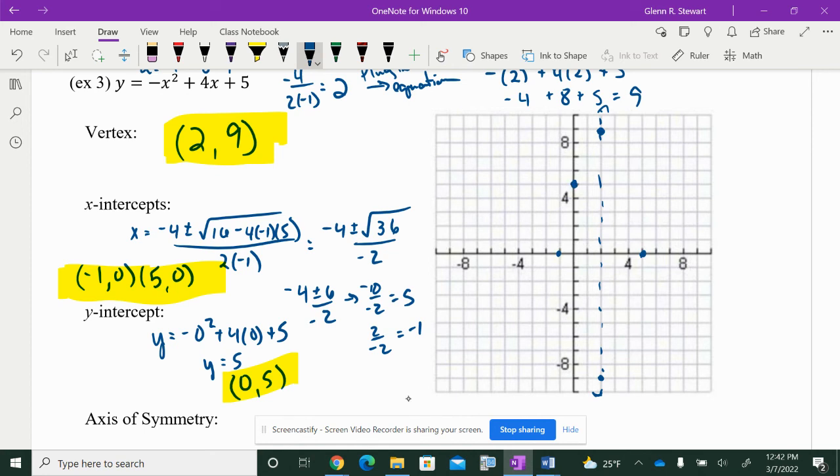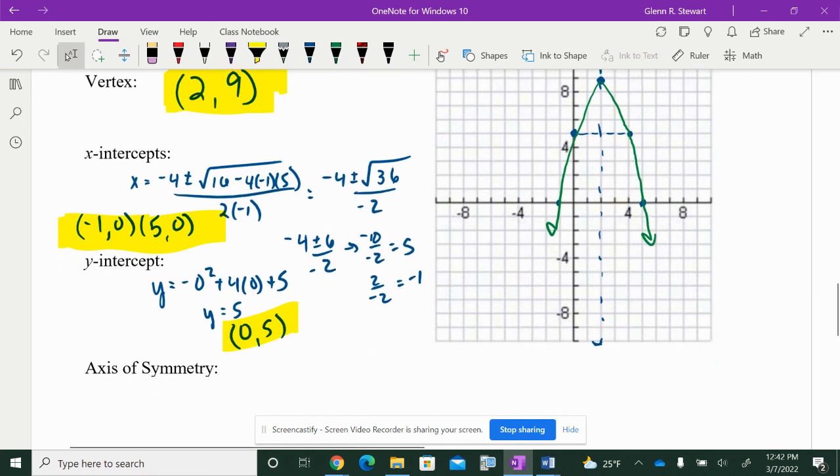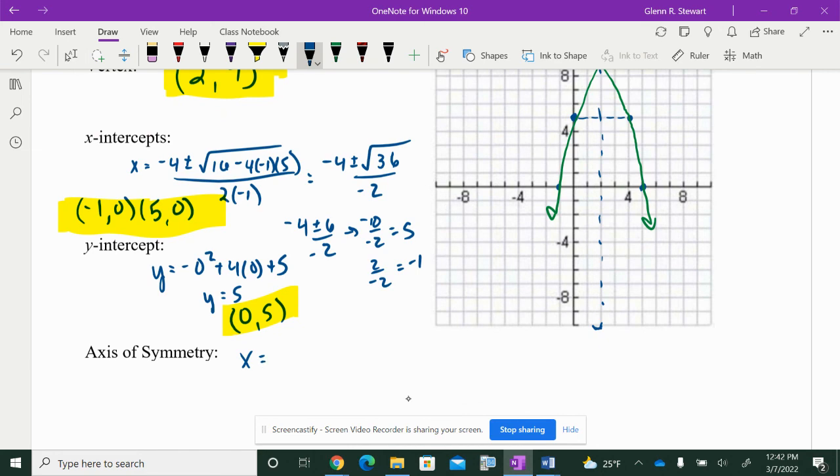So, 5 here, and then I'm 1, 2 away, so 1, 2 away here for my other point. And then, here's my graph. Don't forget, your axis of symmetry is always the same as your vertex x value. x is equal to 2. That's that imaginary dash line that I put there. And that's pretty much it.